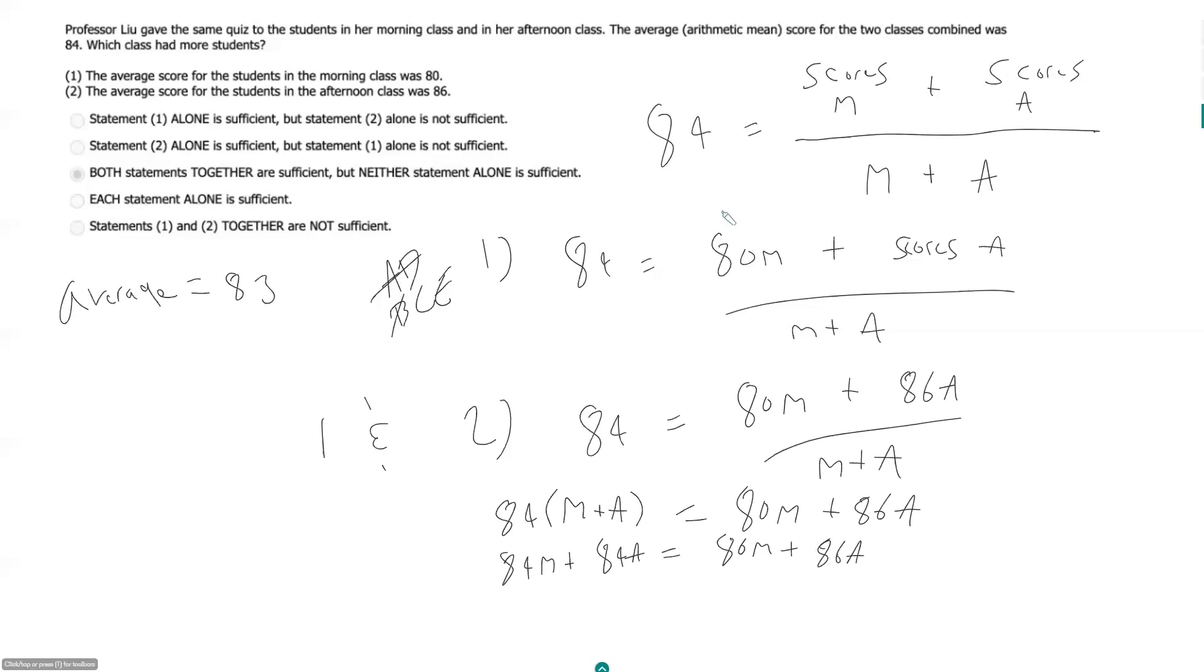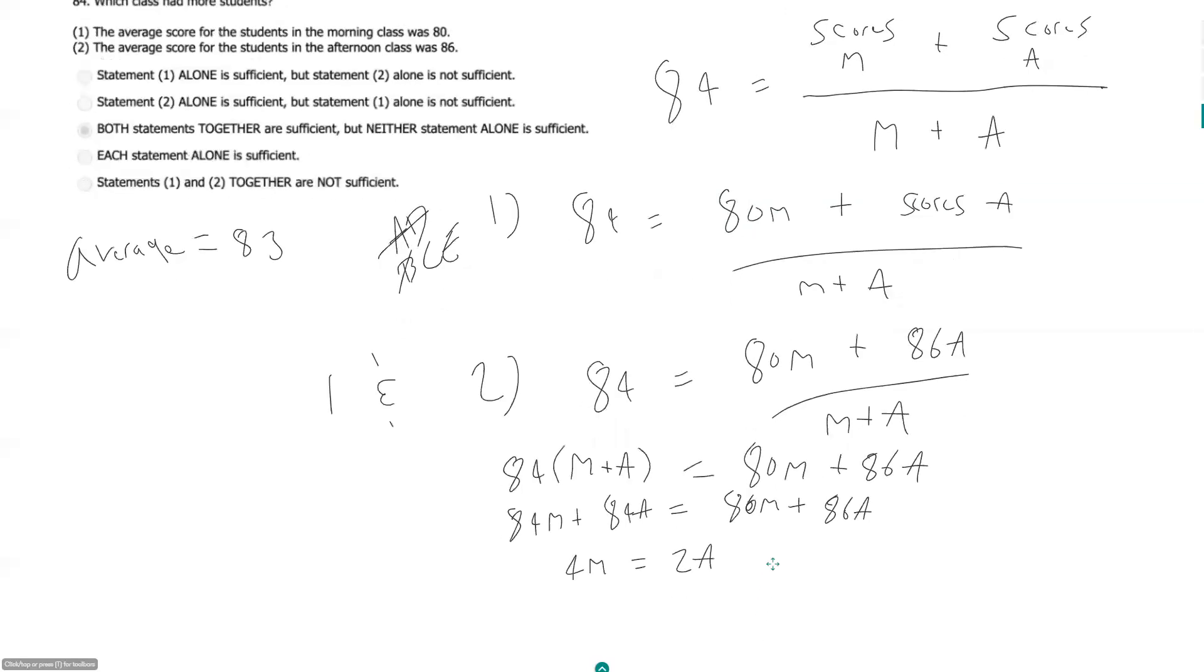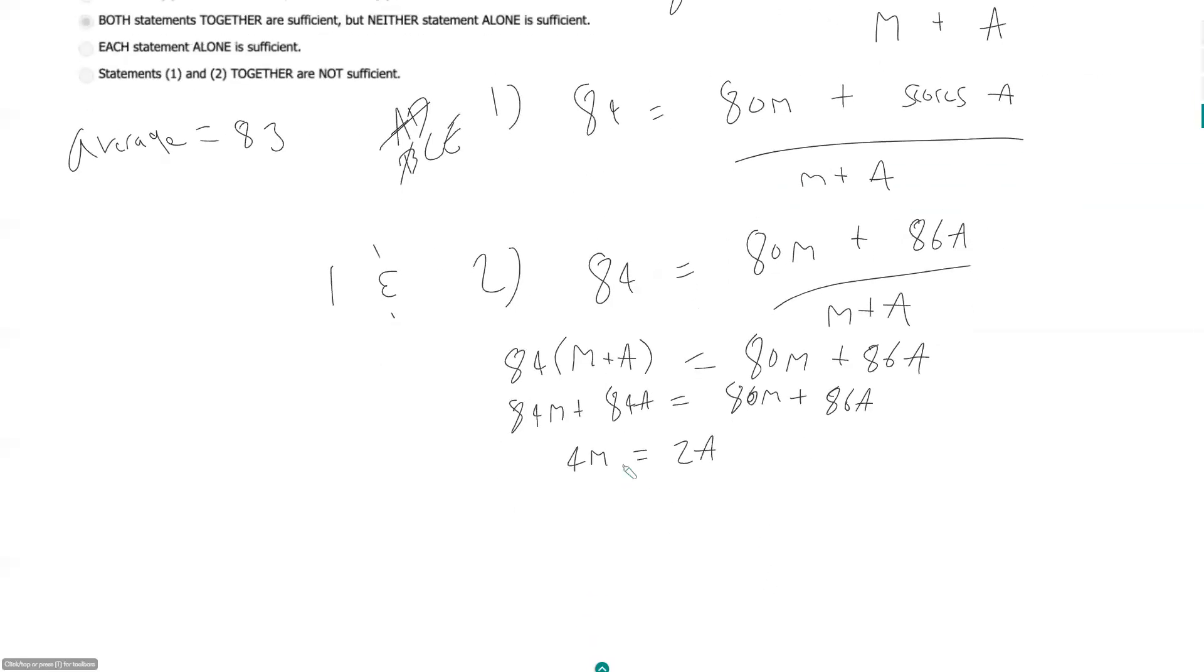And then we can subtract 80M from each side and we get 4M and then subtract 84A from each side is equal to 2A. So then finally, if we want to get just everything in terms of one of the classes, divide each side by 4. And so M is equal to 2 fourths or 1 half A.